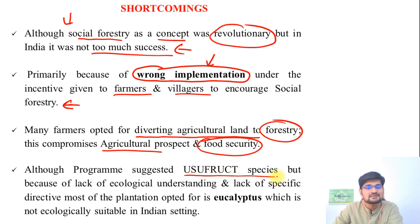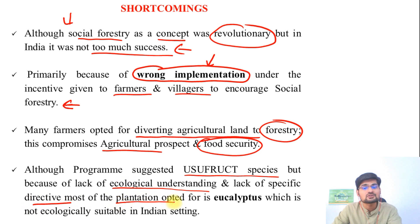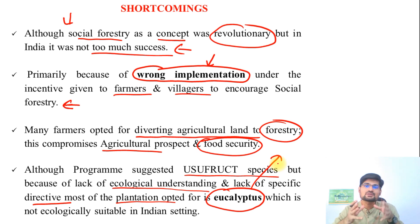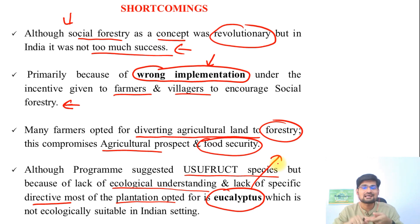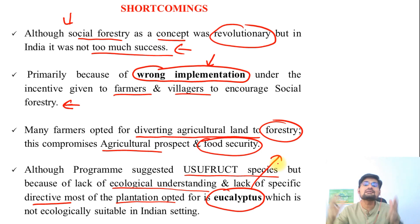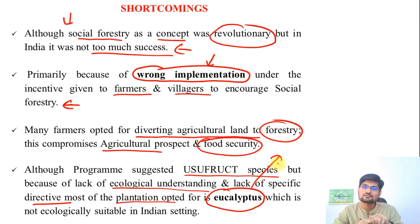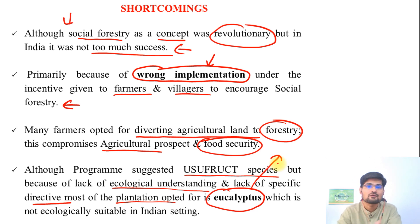Although the program suggested use of fruit species, because of lack of ecological understanding, training, and specific directives, most of the plantation opted for eucalyptus in India. Eucalyptus is a tree that drains out water from the land — marshy areas or alongside highways are fine for it, but if you plant eucalyptus on arable land it makes that land degraded over time because it absorbs lots of moisture. People did not have that knowledge, so this eucalyptus plantation led to lots of issues and problems in many areas in India — that was the major shortcoming of the social forestry program.